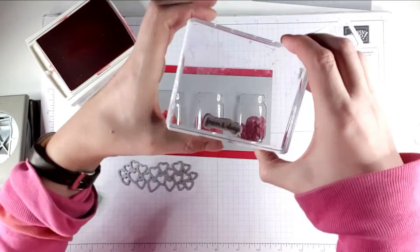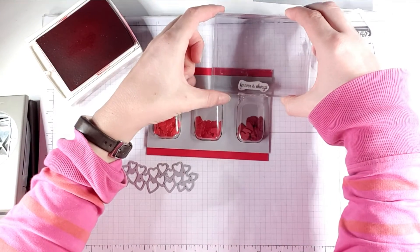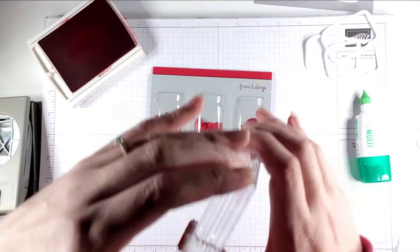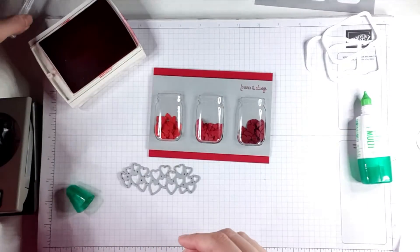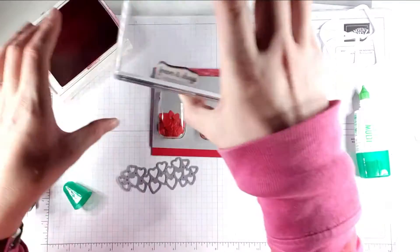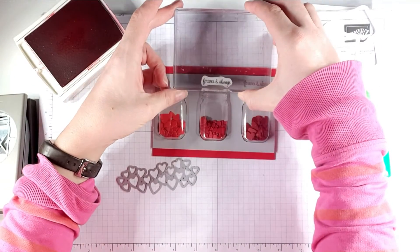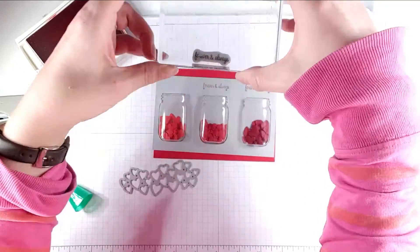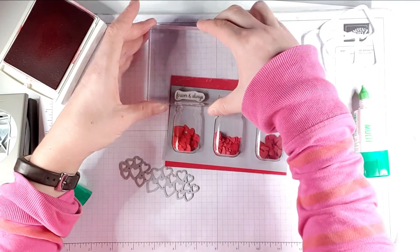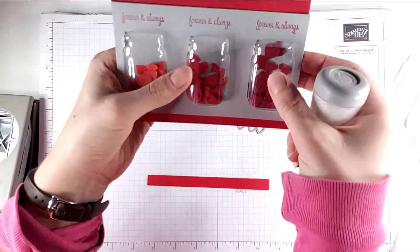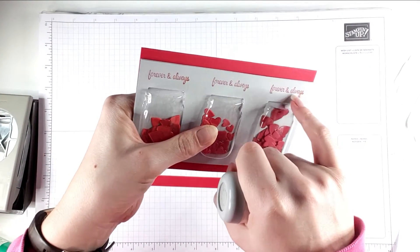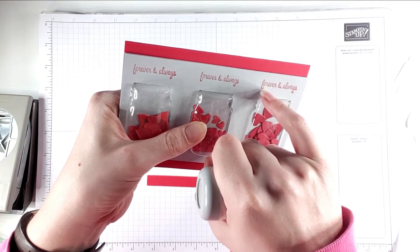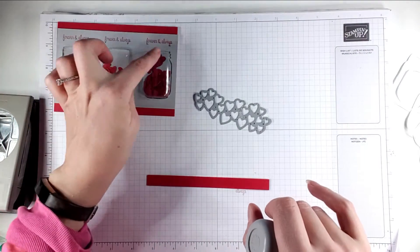I'm just going to stamp forever and always just up here. I might actually do that above each of the diamonds I think. You've probably noticed that when I did this, I made a bit of a mistake. I got a bit of extra stamping on there, a bit of extra ink on there.